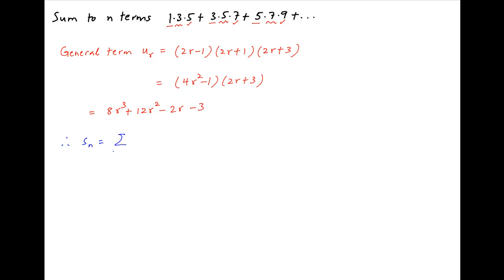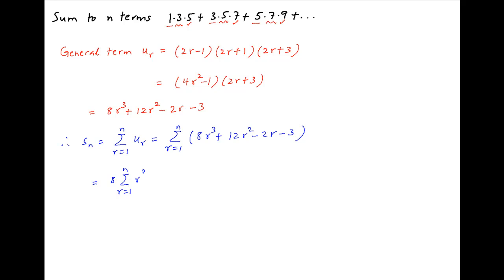Therefore, the sum to n terms of the given series, denoted by Sn, is equal to the summation of (8r³ + 12r² − 2r − 3), which equals 8 times summation of r³ plus 12 times summation of r² minus 2 times summation of r minus 3 times summation of 1, where r goes from 1 to n.